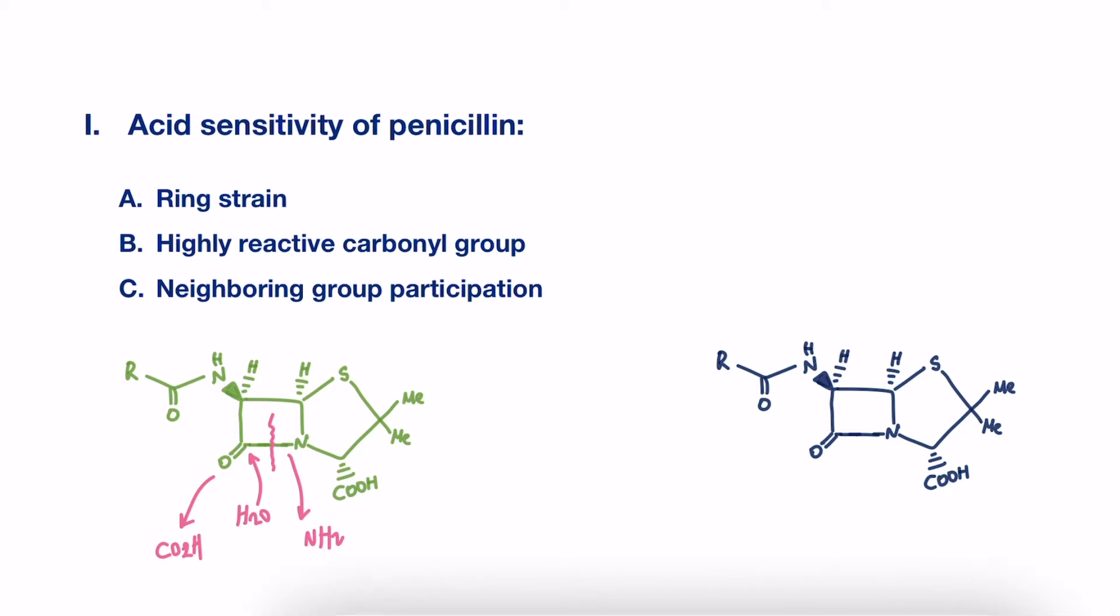First, ring strain. Penicillin suffers from large angle and torsional strains. As the bicyclic system, you can see in this graph here, that is made of four-membered ring fused to five-membered ring, is highly unstable and unfavorable. Thus, acid-catalyzed ring-opening reaction can alleviate some of this strain by breaking the beta-lactam ring.